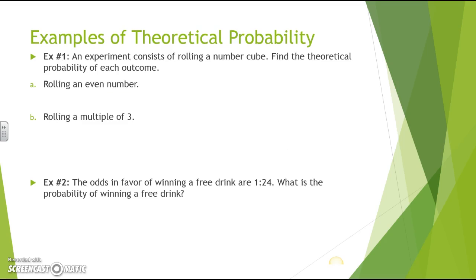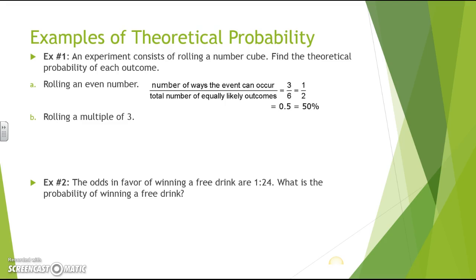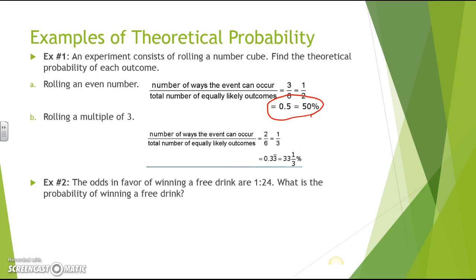Let's look at examples of theoretical probability. An experiment consists of rolling a number cube. For rolling an even number: there are three even numbers (2, 4, 6) out of 6 total sides, giving 3/6 = 1/2, or 50%. For rolling a multiple of 3: there are two multiples of 3 on a die, out of 6 sides, giving 2/6 = 1/3, or approximately 33 and one-third percent.